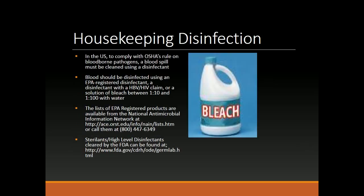In the US, to comply with OSHA's rule on bloodborne pathogens, a blood spill must be cleaned using a disinfectant. Blood should be disinfected using an EPA-registered disinfectant with an HBV/HIV claim, or a solution of bleach between 1:10 and 1:100 with water. The list of EPA-registered products is available from the National Antimicrobial Information Network.